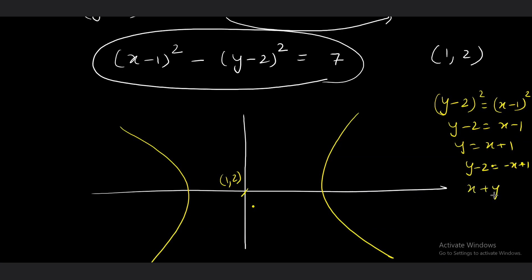y - 2 equals minus x + 1, which means x + y equals 3. So, if you notice these equations, then these are nothing but the remaining two lines given in the question.